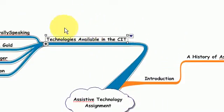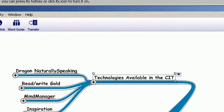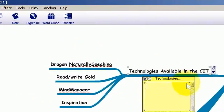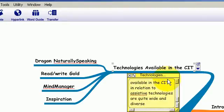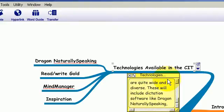Again, I'm going into the branch here for the technologies available in the CIT. I go back up, I added my notes. The technologies available in the CIT in relation to assistive technologies are quite wide and diverse. These would include dictation software like Dragon NaturallySpeaking, narration software like Read/Write Gold, and mind mapping software like MindManager and Inspiration.